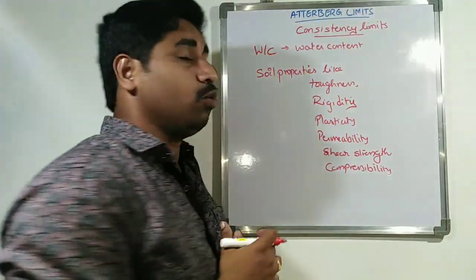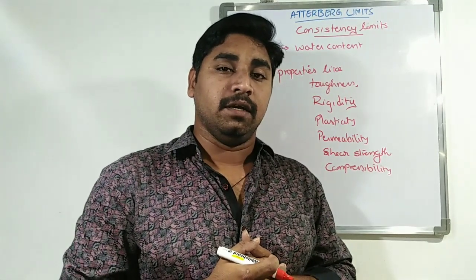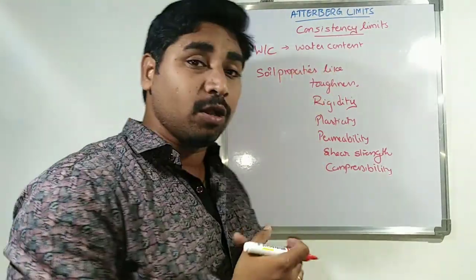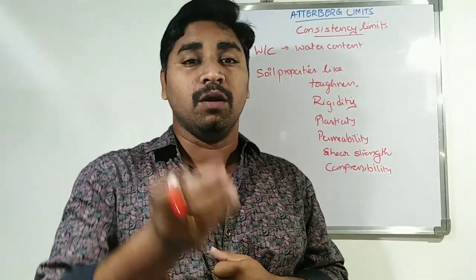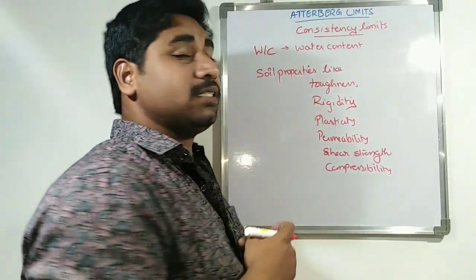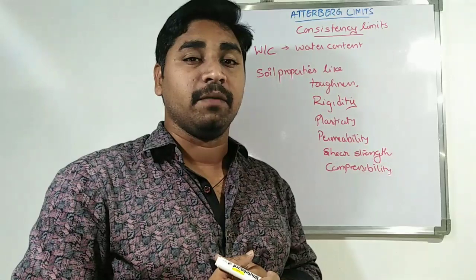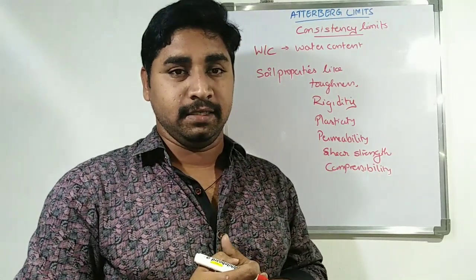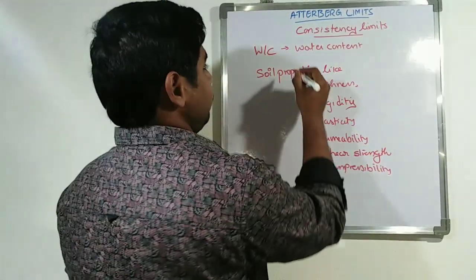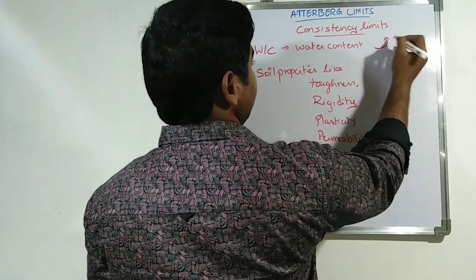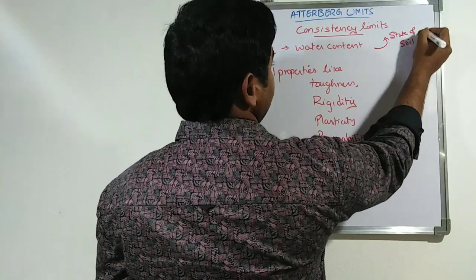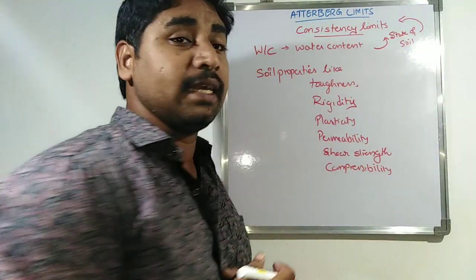In order to know about the consistency limits, we have to know about the water content, because these consistency limits are also dependent on the water content available in the soil. Mainly these consistency limits have arrived from the variation of water contents and how this variation of water content is going to affect the state of soil. Based on that only, we got these consistency limits.